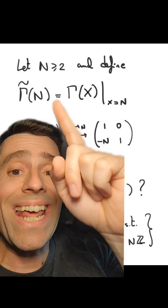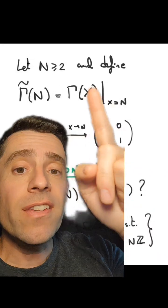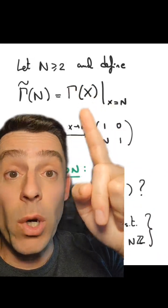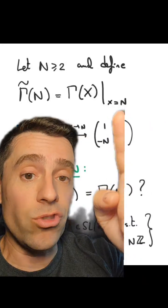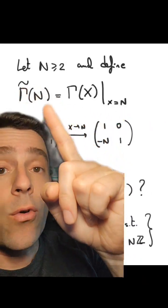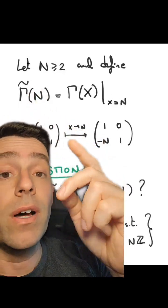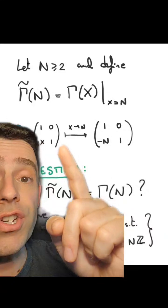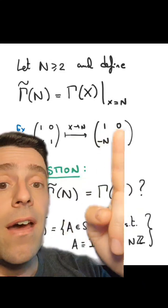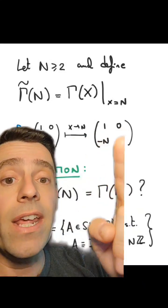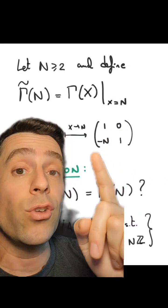Now let n be greater than or equal to two, some integer. These matrices with polynomial coefficients can be evaluated at x equals n, and then I get a group of numerical matrices — matrices that now have integer coefficients. So for example, when I evaluate this one at x equals n, I get this matrix with n an integer, which is just an element of SL2(Z).